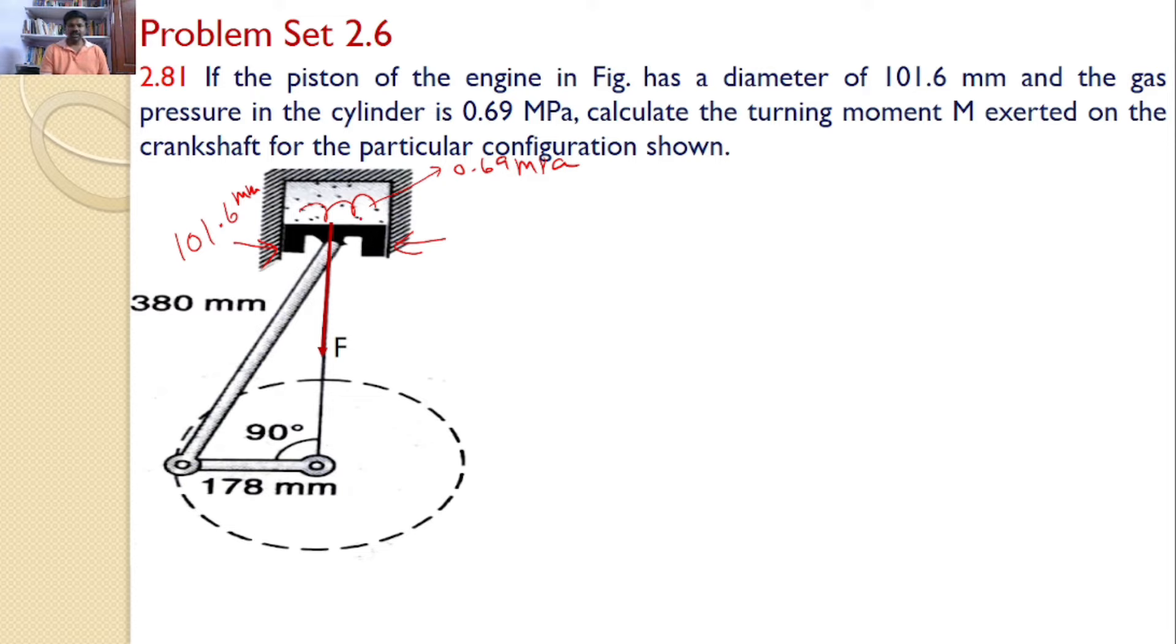For that, first we will calculate the force exerted by the gas pressure onto the piston, that is F. This force multiplied by this distance gives the moment on the crankshaft.